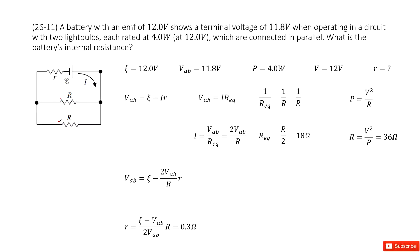The first step is to list all the given quantities. The emf is given, terminal voltage is given, and the power for each light bulb is given as 4 watts at the standard voltage of 12 volts. We need to find the internal resistance, small r.